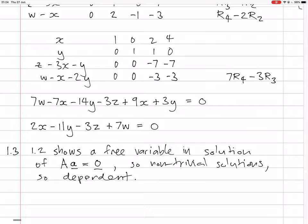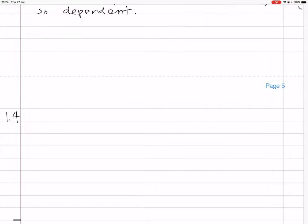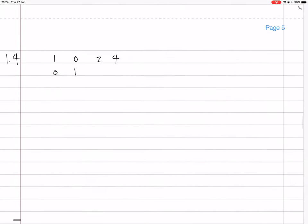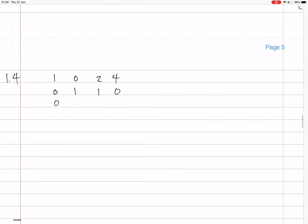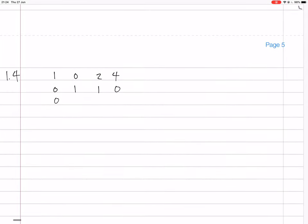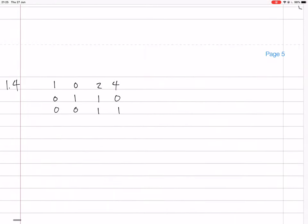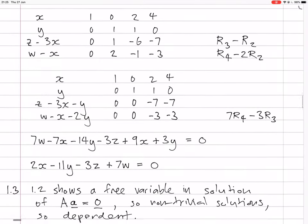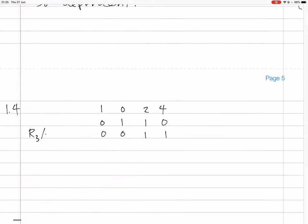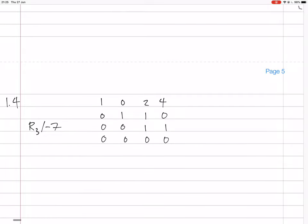So the Gauss reduction came to the stage of having 1, 0, 2, 4, 0, 1, 1, 0, then 0, then we had 0, then we had 0, 0, we had minus 7, minus 7, so that could be 1, 1. And so we know we'd get to that if we did row 3 divided by minus 7. We'd already got rid of the last row by that. So we have that.